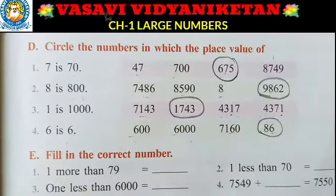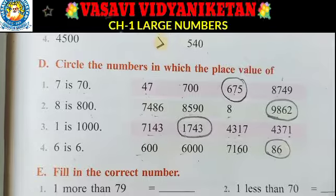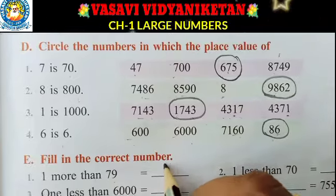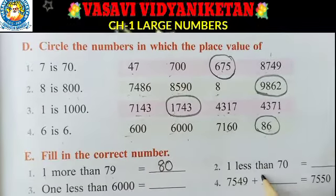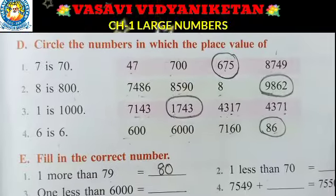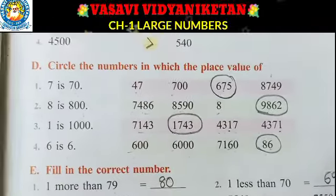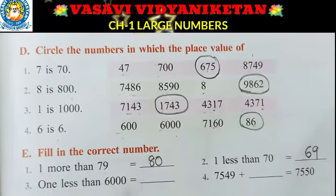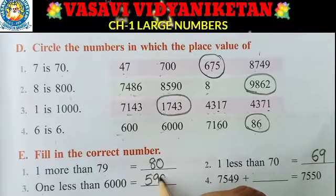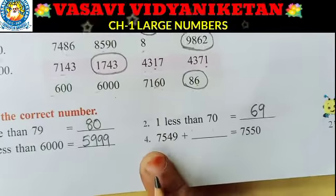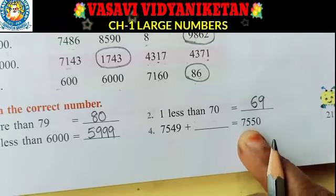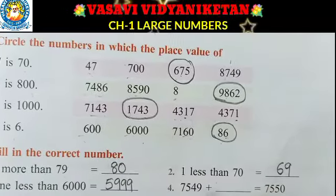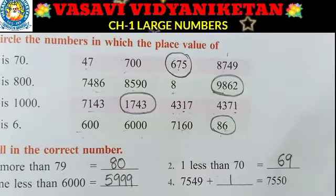Next Nana, E Roman — fill in the correct number. 1 more than 79: we have to add 1 to the given number, so 79 plus 1 equals 80. Next, 1 less than 600 — so the answer is 599. Next, 1 less than 6,000 — so 6,000 minus 1 is 5,999. Next, 7,549 plus dash equals 7,550 — so 7,549 plus 1 equals 7,550.